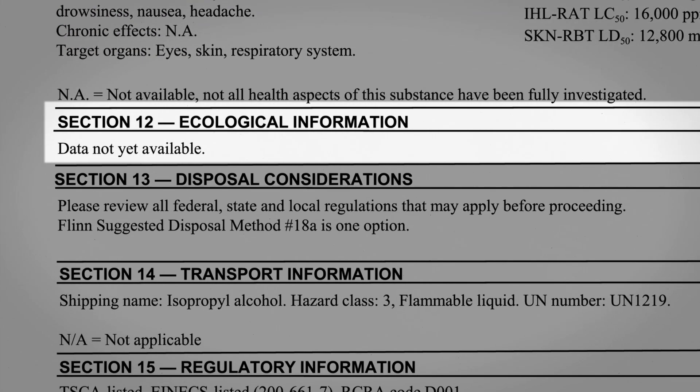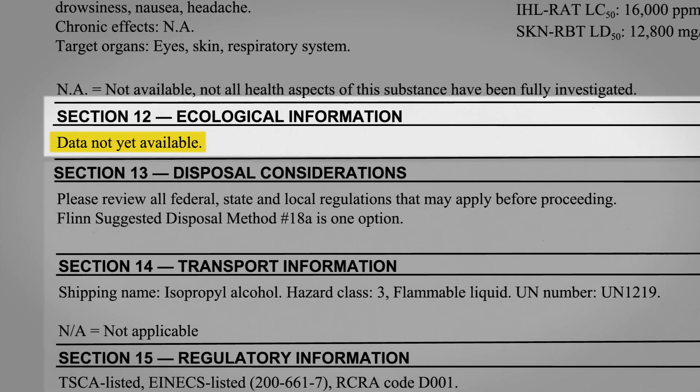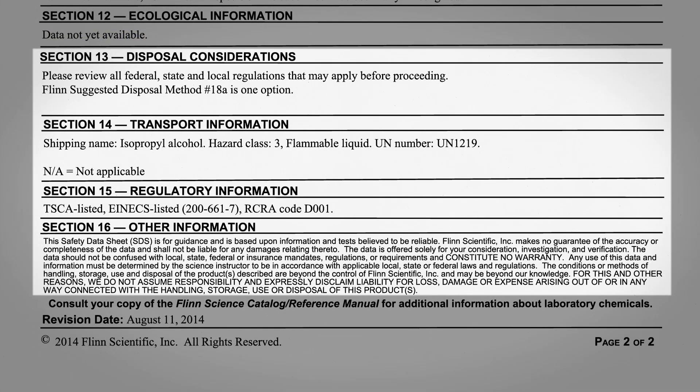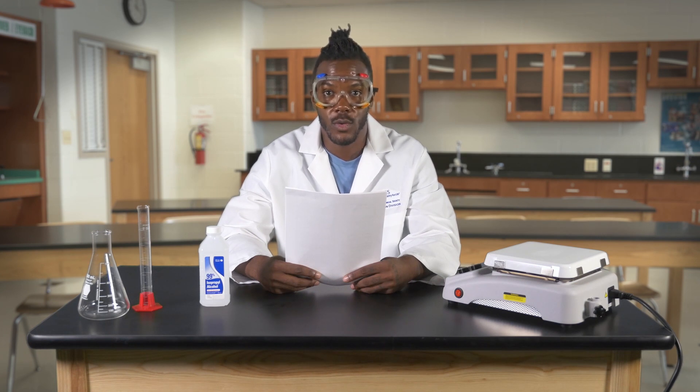Section 12 provides information about the effect a chemical may have on the environment. Sections 13 through 16 concern regulations for the disposal, transportation, and industrial use of chemicals, and are beyond the scope of this video. Remember, working safely with chemicals requires that you recognize their hazards, understand risks, minimize those risks, and prepare for emergencies. All of this information can be found in the SDS, which is why it's such an important document and crucial for your safety in the lab.